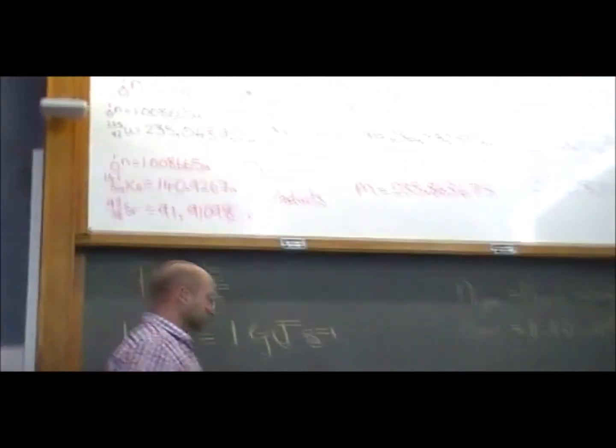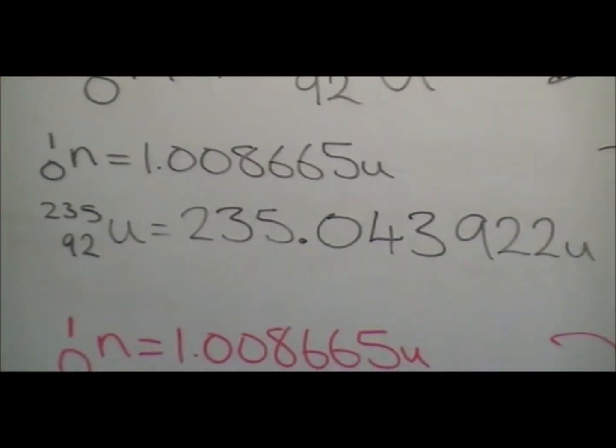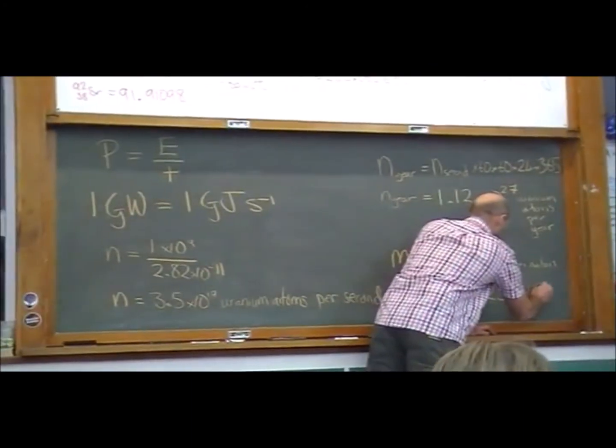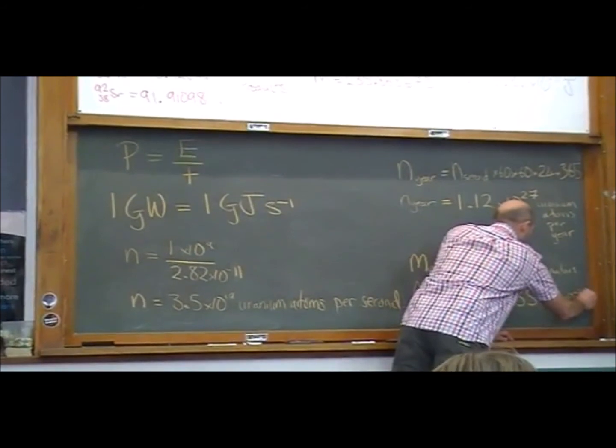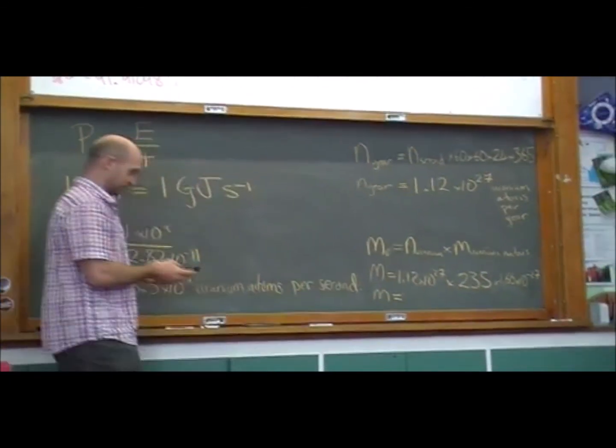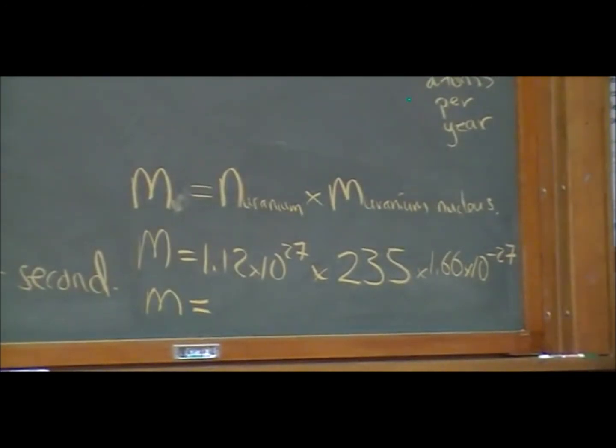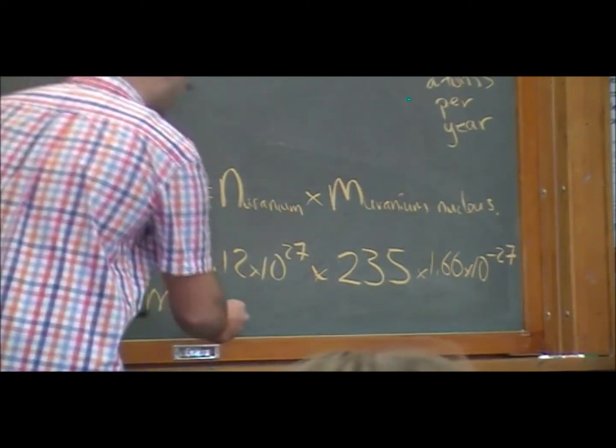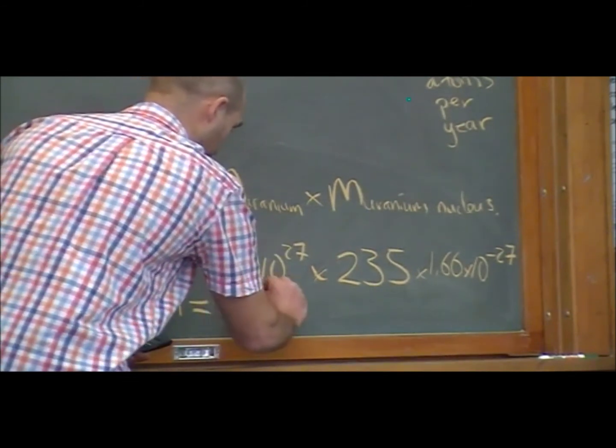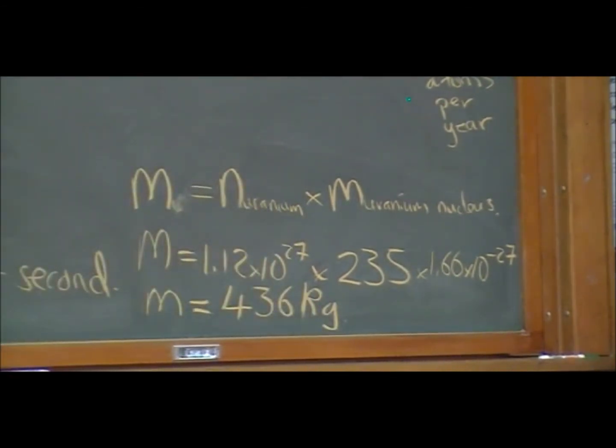235 approximately. But we have to convert that into kilograms. Times 1.66 times 10 to the negative 27. What? How much desert have we got to dig up for this? And then work out how many kgs of uranium are there per square kilometer? Who got an answer? 430? 435. So about 436? Yes. 436 kilograms. So like a wheelbarrow, a couple of wheelbarrows full of them. Nice.